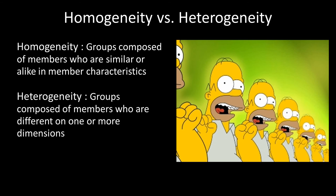A couple of definitional things: homogeneity versus heterogeneity. When we talk about homogeneity, we're talking about groups composed of members who share a wide variety of characteristics — groups that are very similar to one another. This can be contrasted with heterogeneous groups, which are composed of members who are very different across a variety of dimensions. Most of the research shows that groups that are more heterogeneous tend to be more successful, though there can be more of a struggle during the earlier phases of group development.